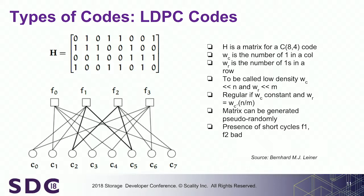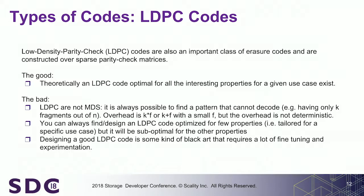The main problem of LDPC applied to storage is the short cycle problem — an interdependency between equations. For example, if you lose C2 and C5, you cannot decode. In a network application you can ask the sender to resend missing data, but in storage you can't — it's lost forever. They are very, very fast, but they are not MDS, which is a problem for us. Also, designing a good LDPC is something of a black art. There are some commercial libraries with all the properties you want, but they are commercial — and our philosophy was to do something open, simple, and clear.